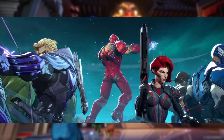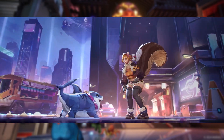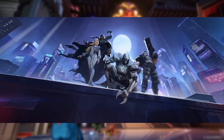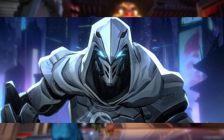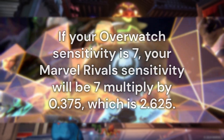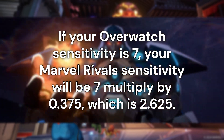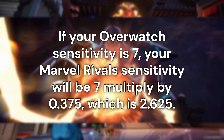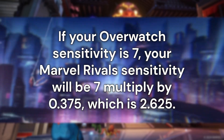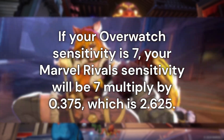For Overwatch 2 players, multiplying their current sensitivity by 0.375 provides a good starting point in Marvel Rivals. For example, if your Overwatch sensitivity is 7, your Marvel Rivals sensitivity will be 7 multiplied by 0.375, which is 2.625.